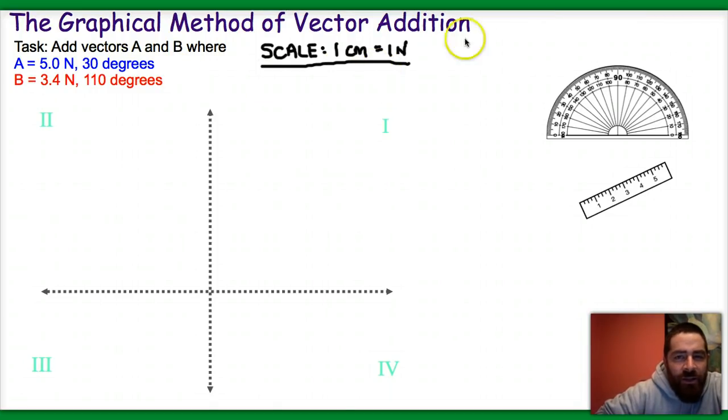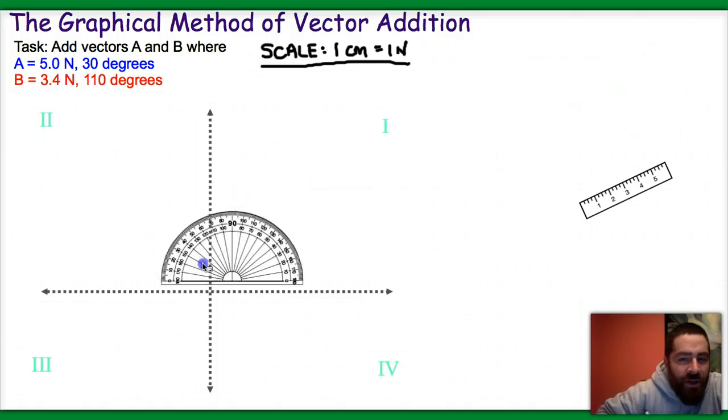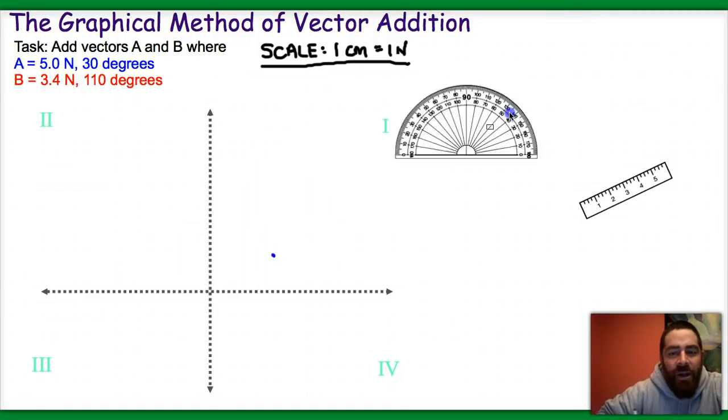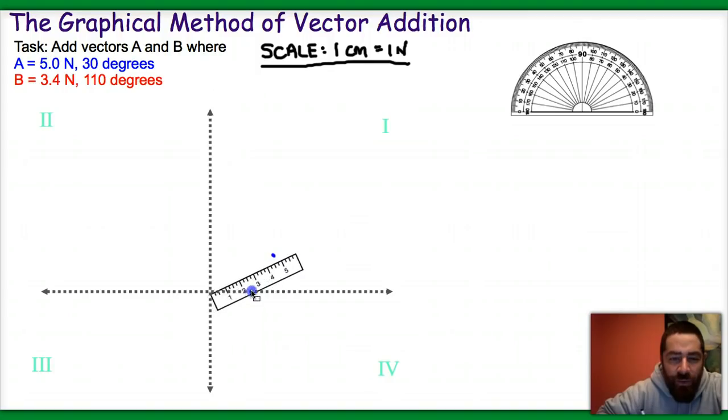So what I'm going to do is grab my protractor and bring it over here. And I'm going to sketch in vector A, which should be at 30 degrees. So let me go ahead and make this mark right here. And when I move the protractor over, I need to then bring over my ruler.